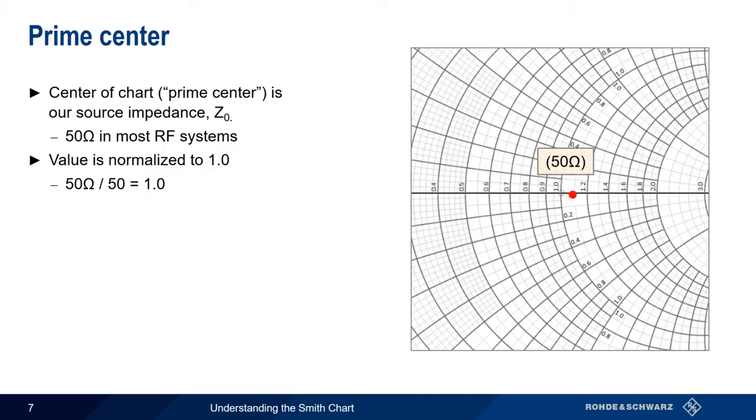If our point moves along the resistive axis to 2.0, this would correspond to a pure resistance of 2 times 50, or 100 ohms. And moving the point to 0.4, would correspond to a pure resistance of 50 times 0.4, or 20 ohms.